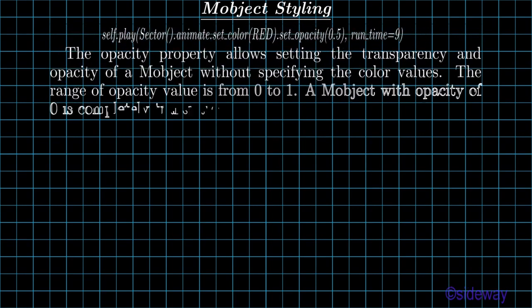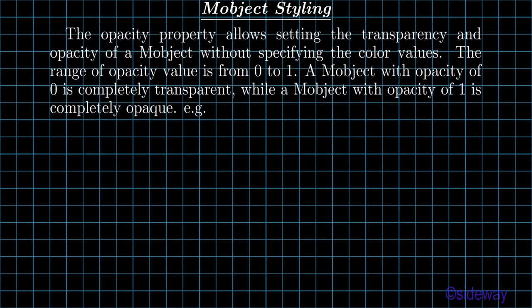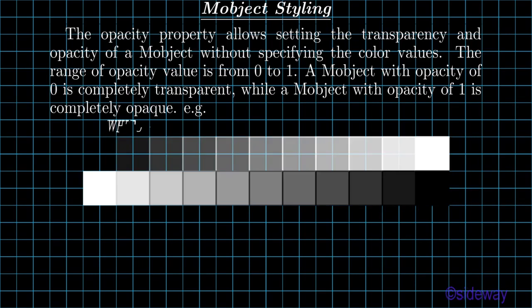The opacity property allows setting the transparency and opacity of a mobject without specifying the color values. The range of opacity value is from 0 to 1. A mobject with opacity of 0 is completely transparent, while a mobject with opacity of 1 is completely opaque. For example: white on black background, and black on white background.